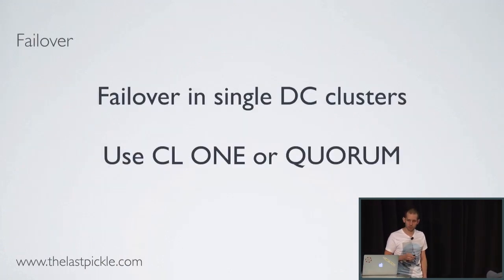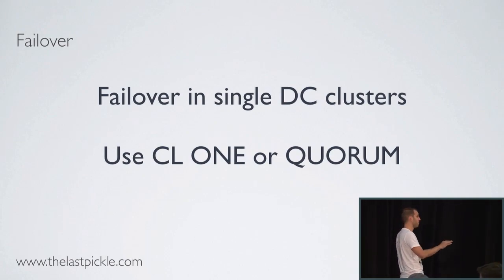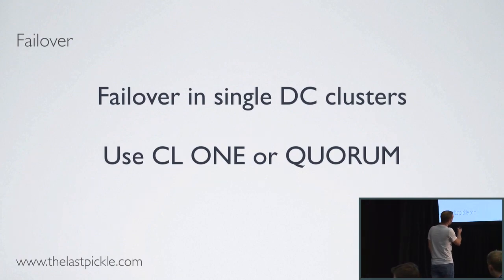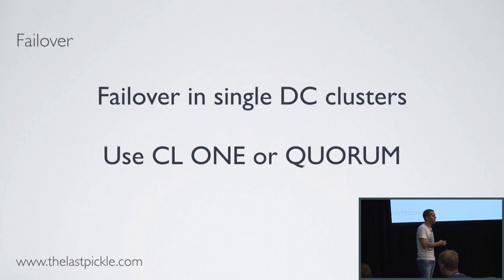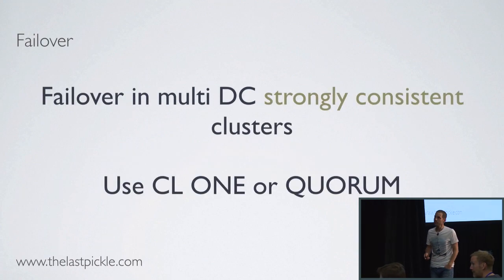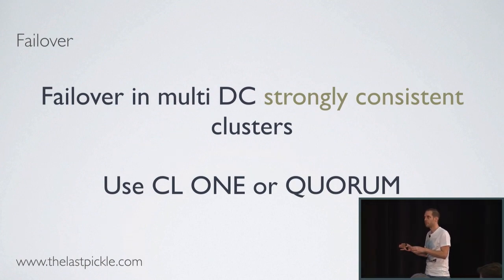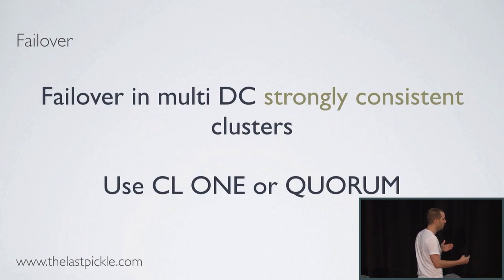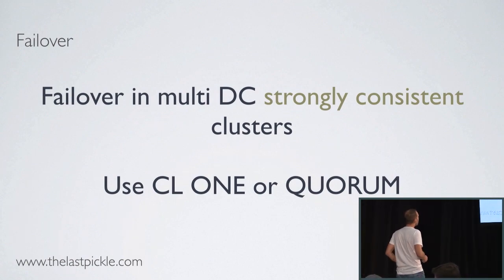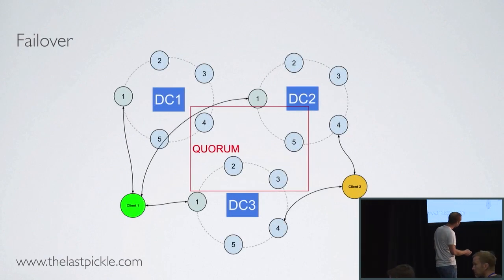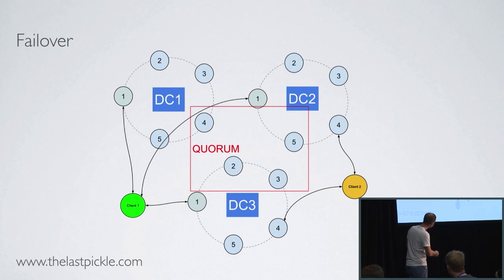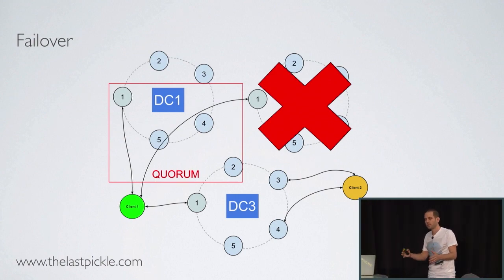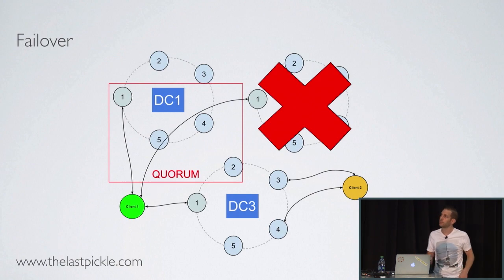Now let's talk about failover. In single DC clusters, if you are using CL1 or CL quorum, you can lose one or two nodes at a replication factor of three, and failover is natural. In a strongly consistent multi-DC cluster with non-DC-aware consistency levels, quorum can be achieved if you have enough replicas across the cluster, so you also have nothing special to do. For example, with three data centers, if we lose DC2, we can still achieve quorum with DC1 and DC3, assuming each DC has the same number of replicas.